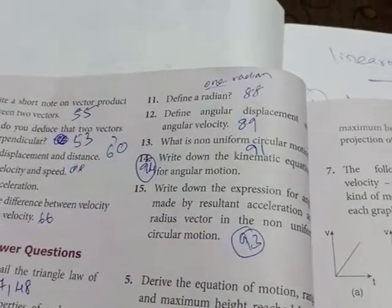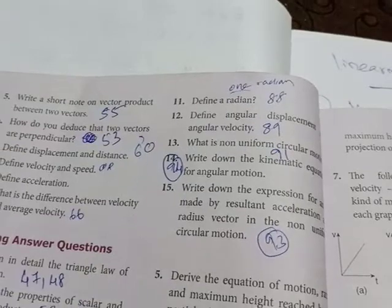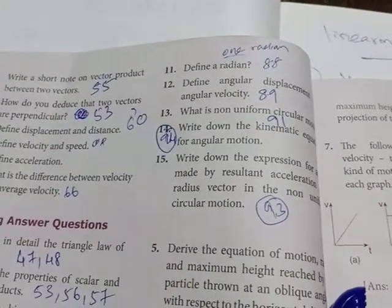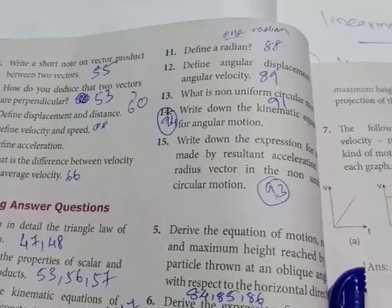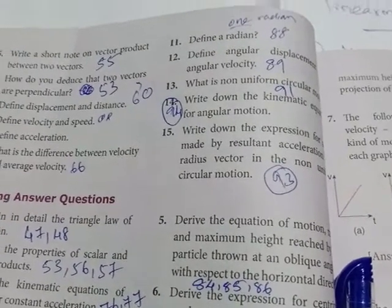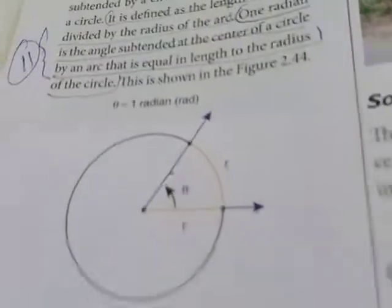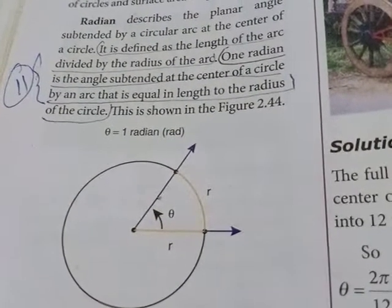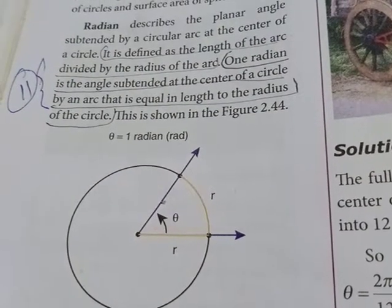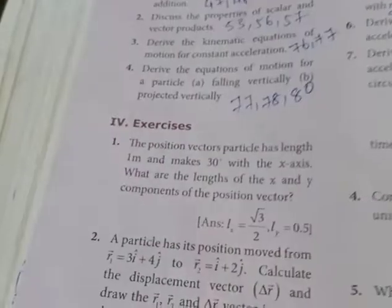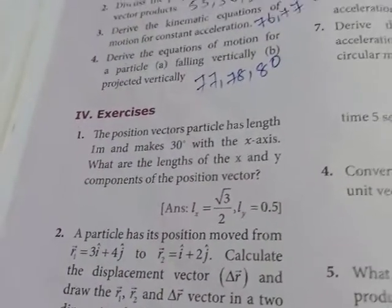Question number 11: define a radian. On page number 88 — one radian is the angle subtended at the centre of a circle by an arc that is equal in length to the radius of the circle.